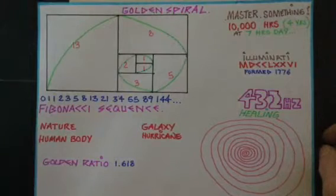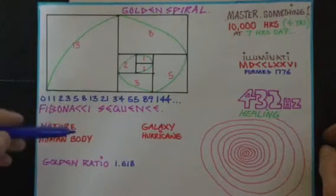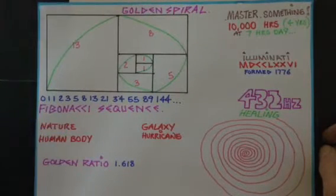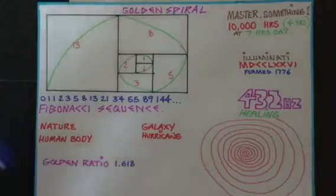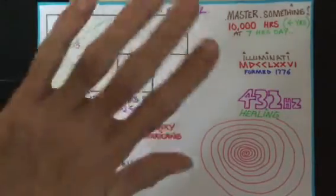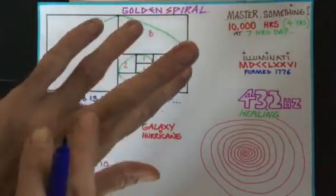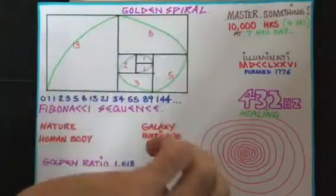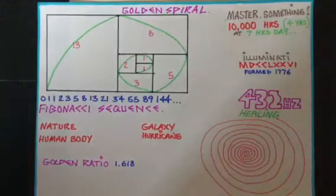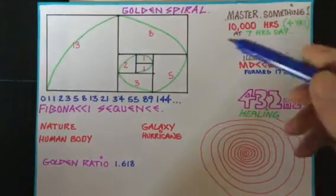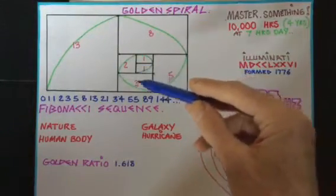Until you realize that sequence actually appears in nature everywhere. Nature, the human body—look at your hand, there's a sequence going right there. Fingers into your hand, arm, and so forth. Look it up. And if you apply it to some sort of geometry, you can end up getting a golden spiral from that sequence.